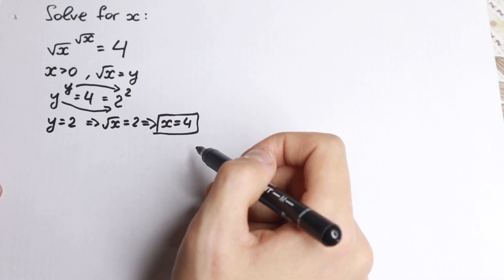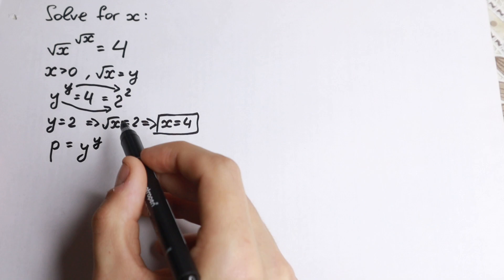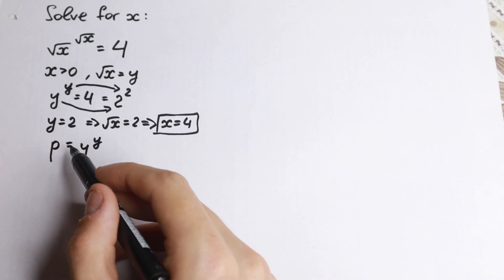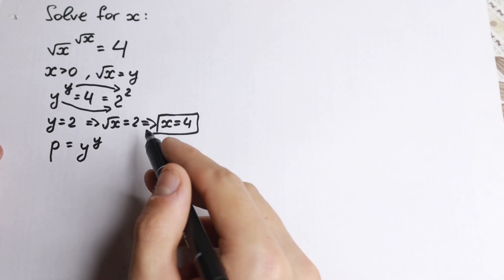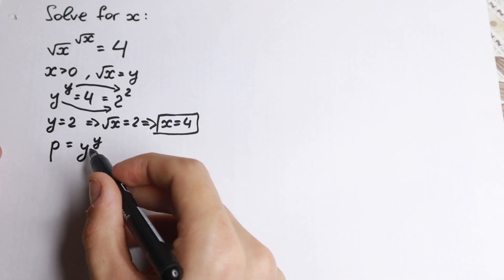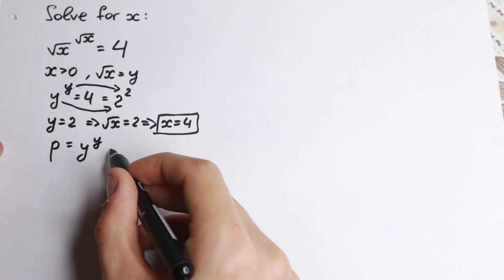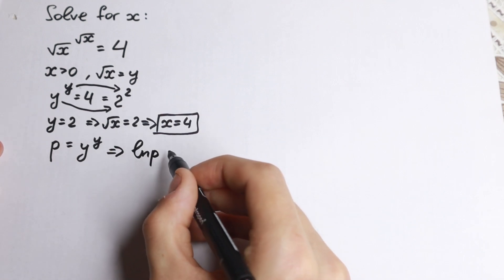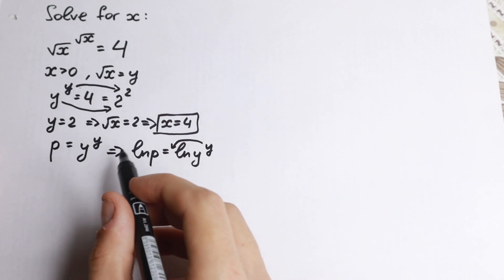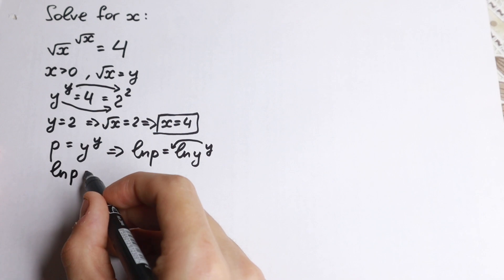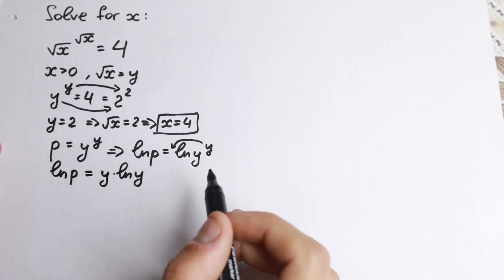Let's find information about the function p equal to y to the power y. If this function is monotonic increasing or decreasing, and if we can find its minimum or maximum, then we'll know everything about the number of roots. First, take the natural log on both sides: ln(p) equals y times ln(y).